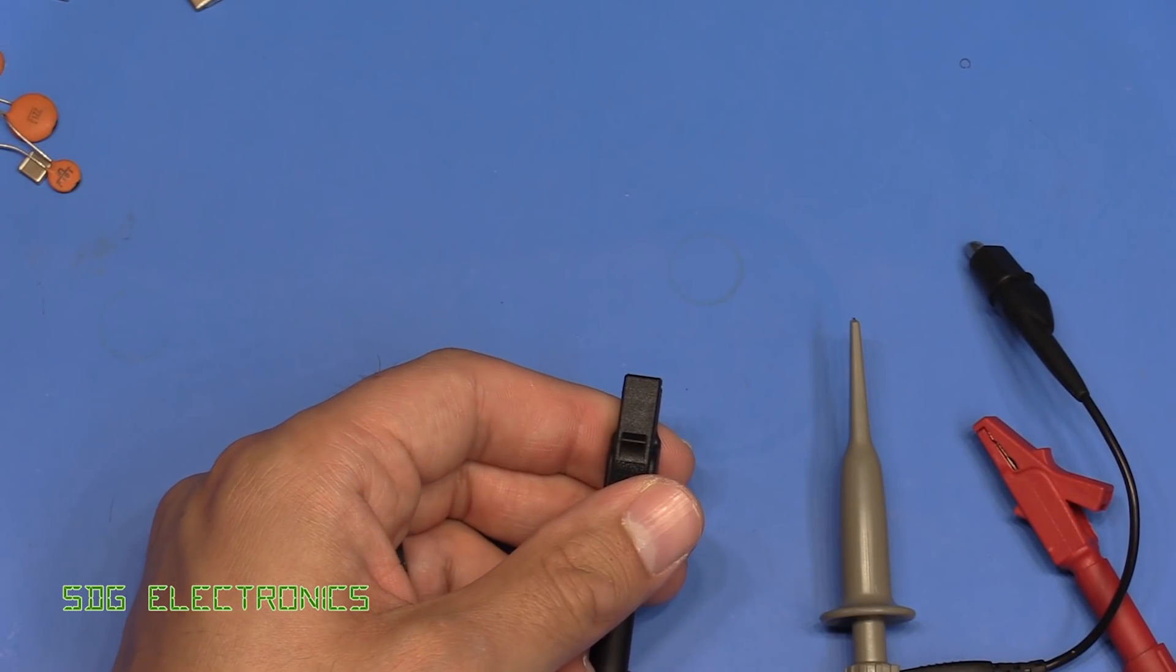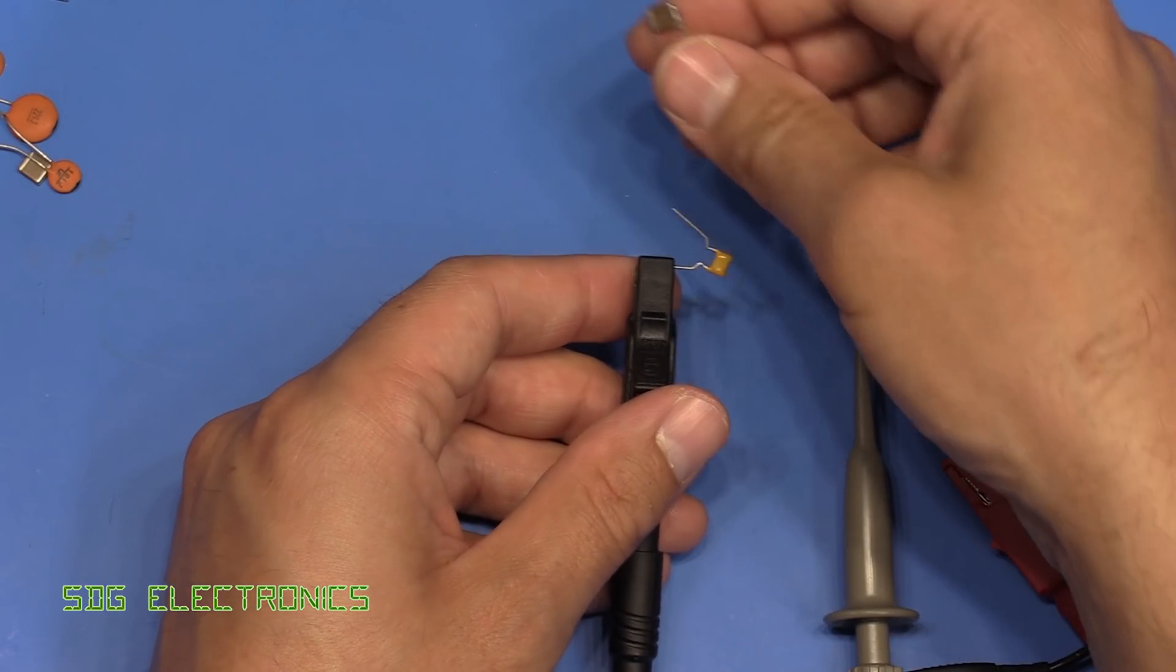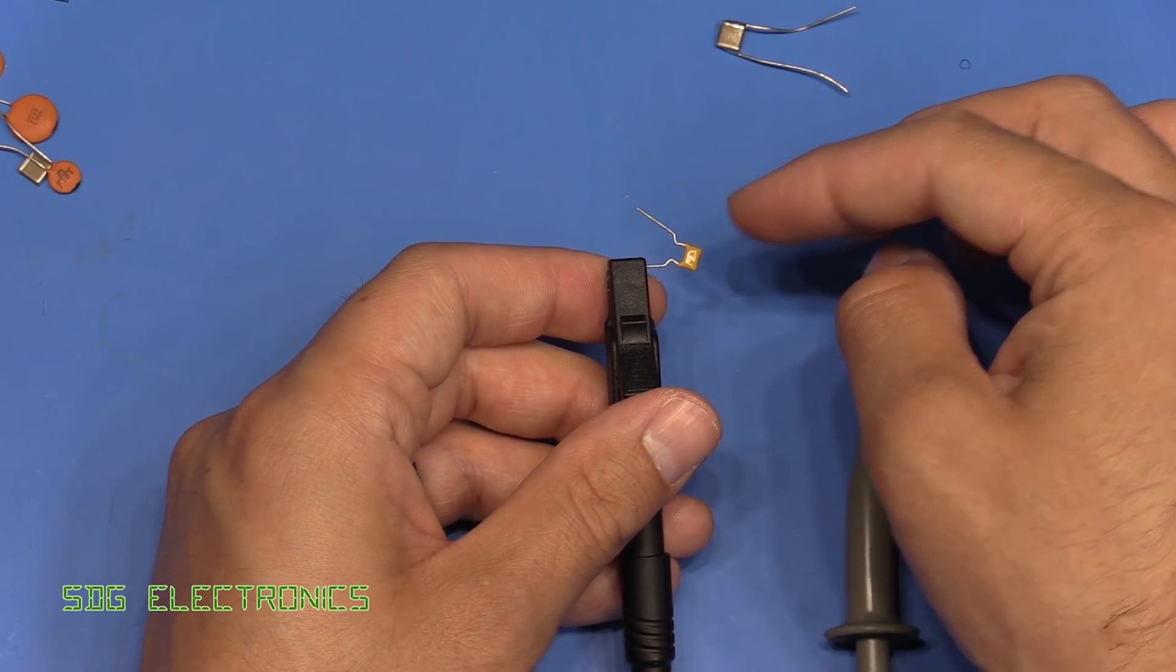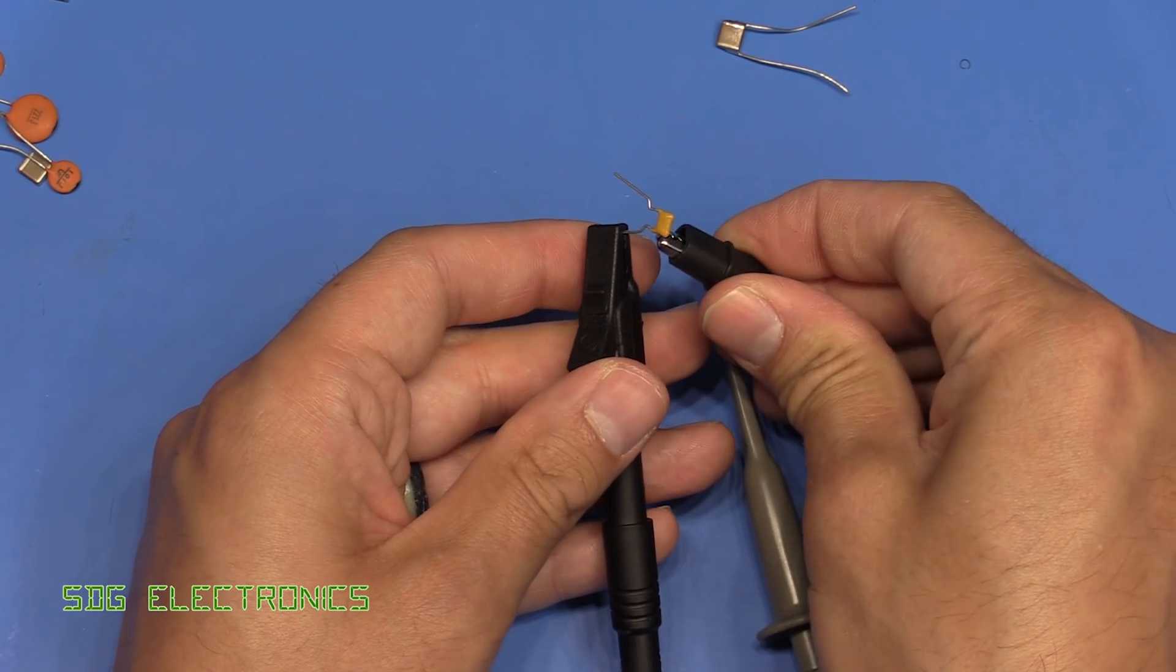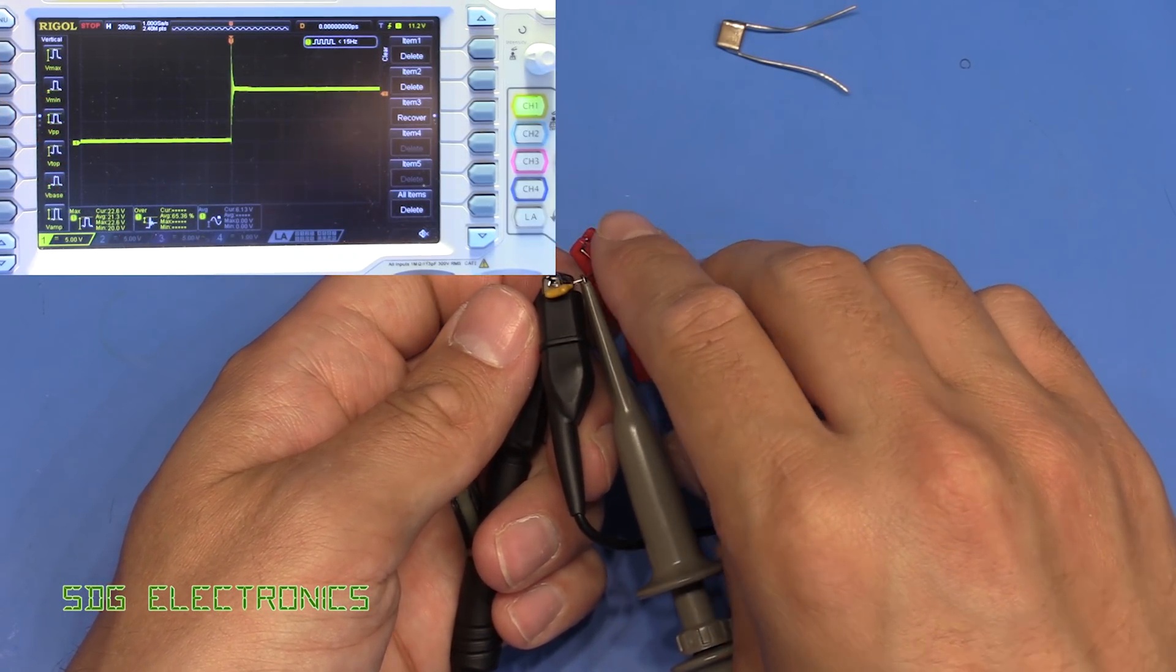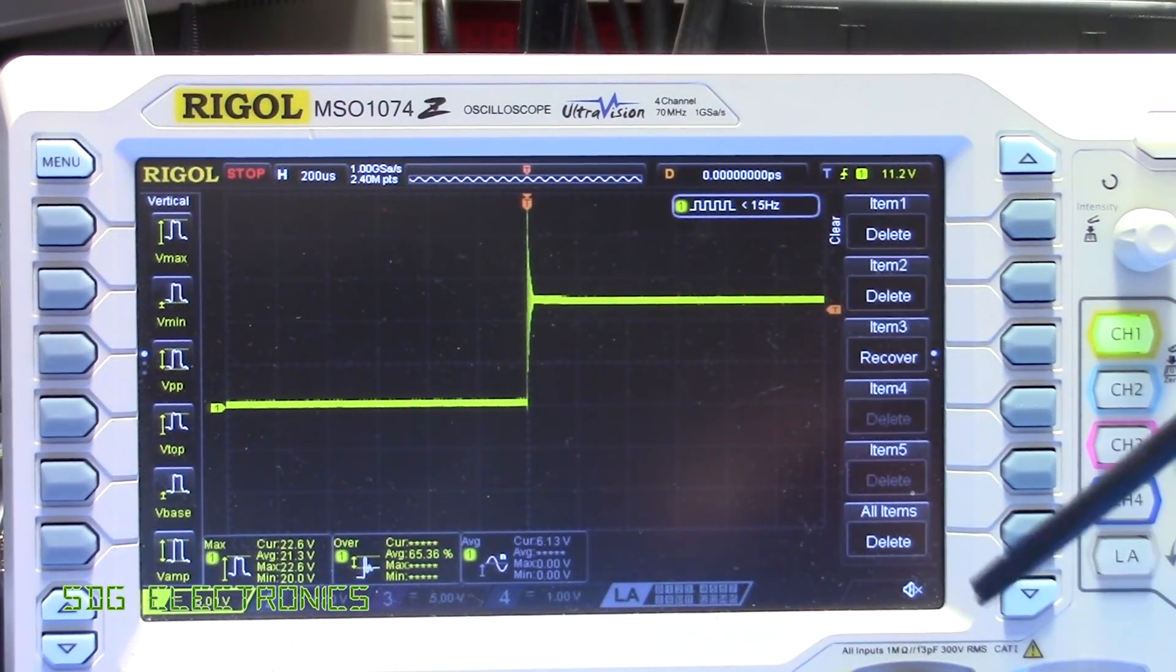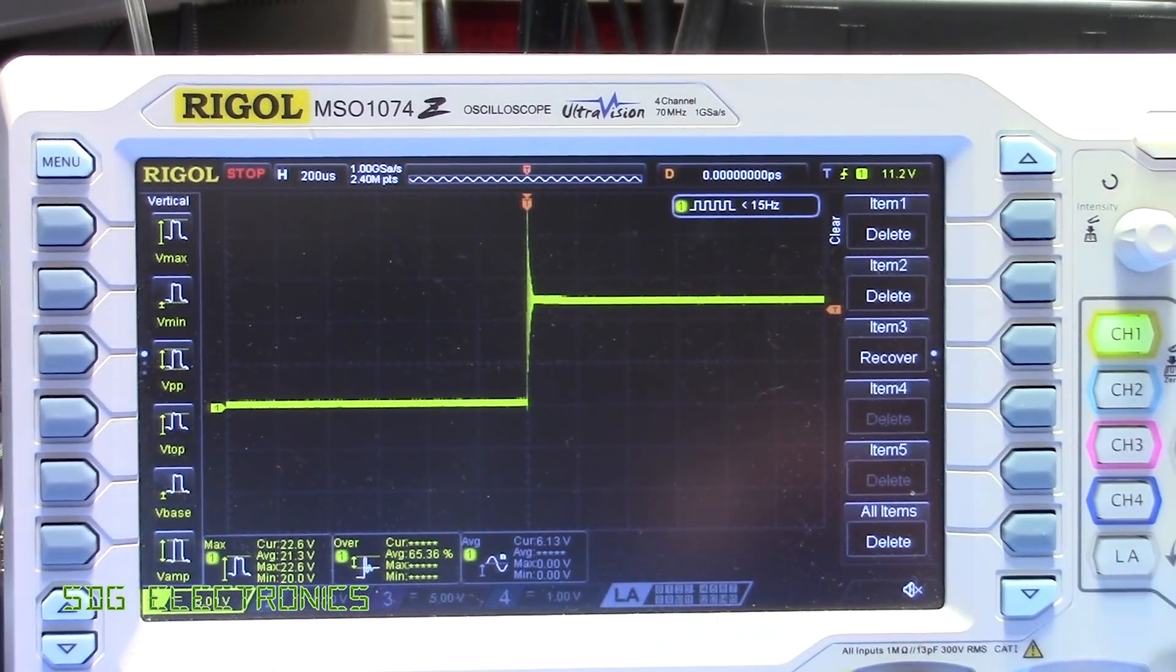We can demonstrate this with a smaller capacitor as well. It's not just limited to something like one of these 22 microfarad capacitors. This one is a 22 nanofarad capacitor. If we hook up the scope again to this and connect up the power, bam, there we go again. This time we're reading a slightly higher peak voltage, 22.6. But the duration is much, much shorter here.